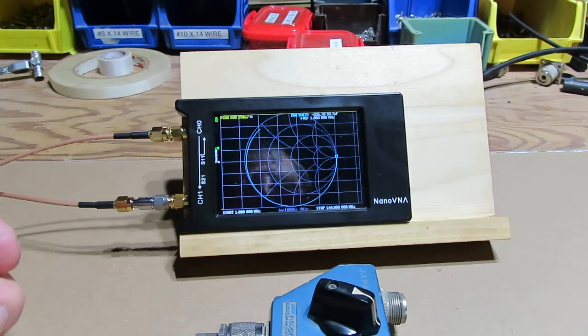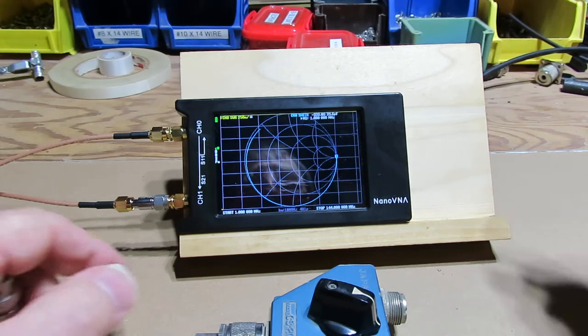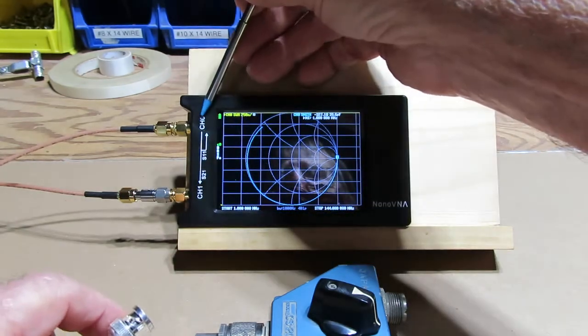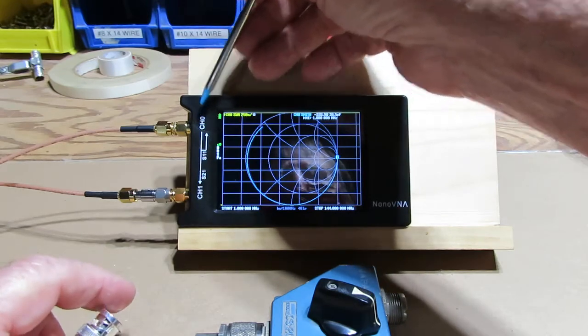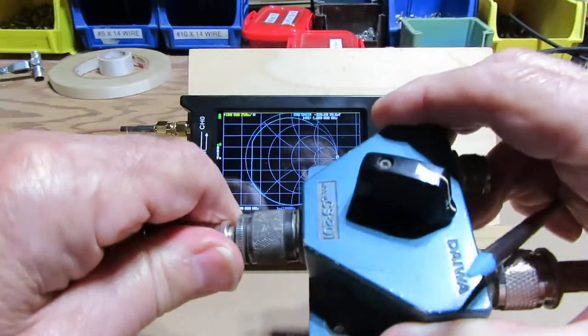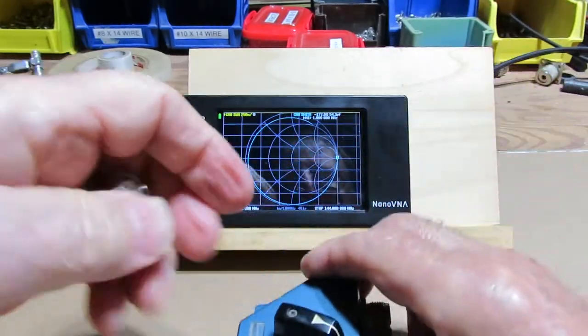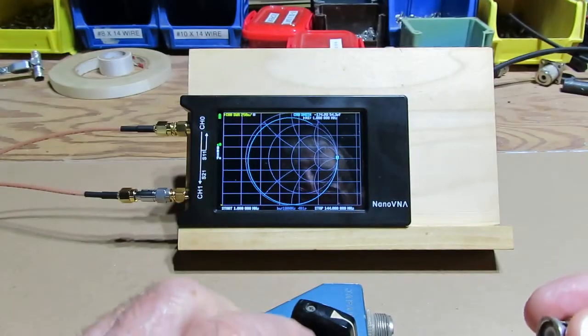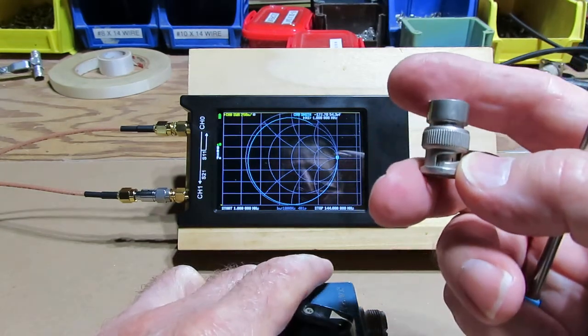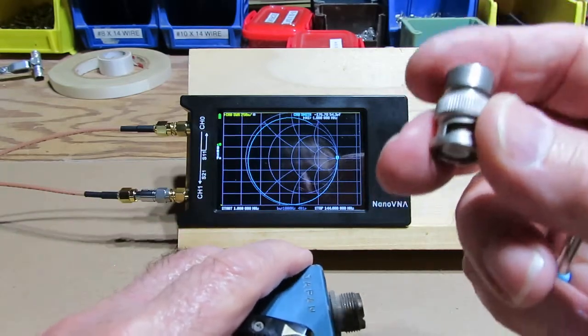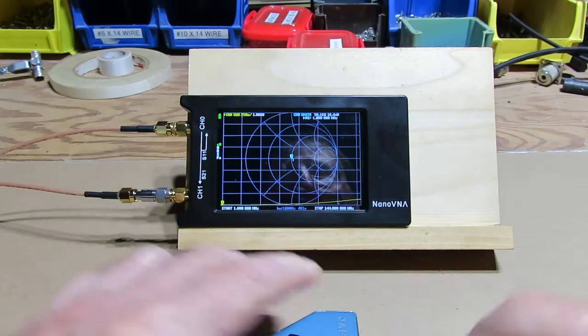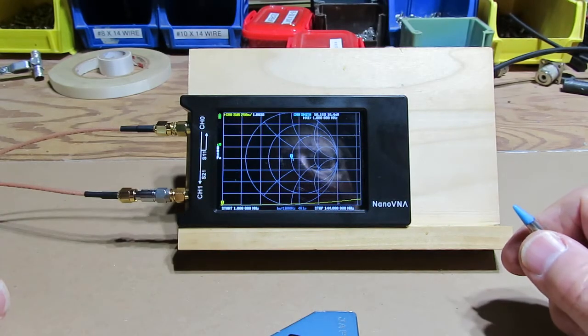Right now we're using the Nano VNA strictly as an antenna analyzer for starters. In other words, we're only using channel zero just like you would any other antenna analyzer. We'll connect that wire there and we're going to check that port, and this is a BNC 50 ohm terminated load. This is highly accurate, 50.0 ohms right on the money.